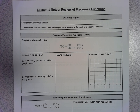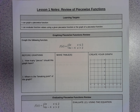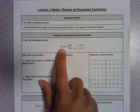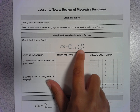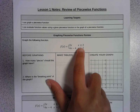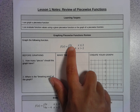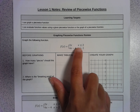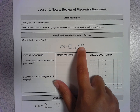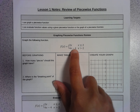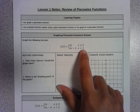We're going to start by reviewing how to create the graph of a piecewise function. Suppose you were asked to graph the function f of x. This function is called piecewise because it is defined in two pieces. The domain tells us to use the equation 2x for all x values less than or equal to 2, and 4x minus 4 for all x values greater than 2.